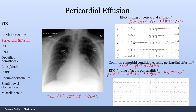Here is an EKG of acute pericarditis. You can see diffuse ST segment elevation throughout. More indicative — though it might be a little small on your screen — are the PR segment depressions seen throughout as well, especially in lead 2.